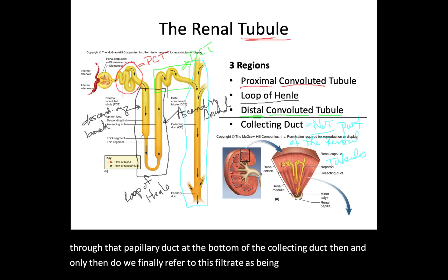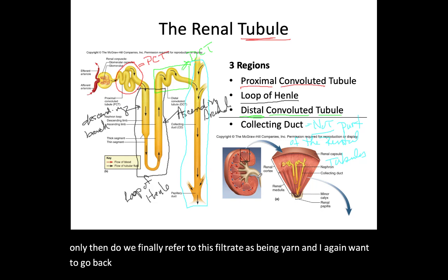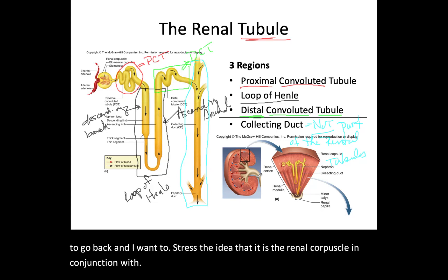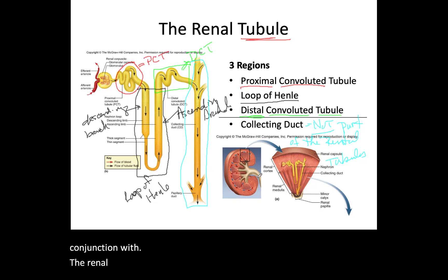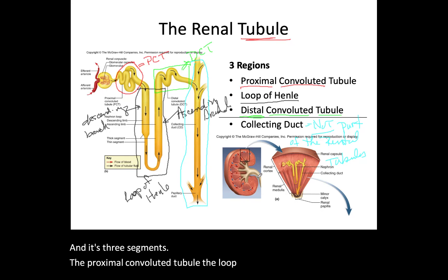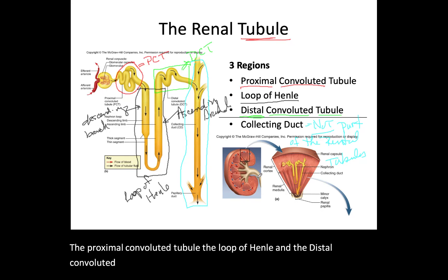I want to stress that it is the renal corpuscle in conjunction with the renal tubule and its three segments — the proximal convoluted tubule, the loop of Henle, and the distal convoluted tubule — that we define as being the nephron.